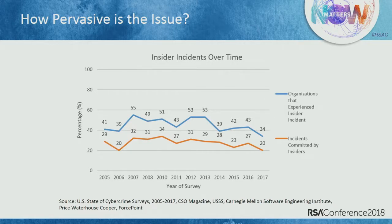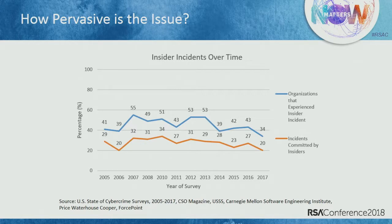Looking at the pervasiveness of insider incidents — we've been doing surveys going back to about 2004. On average, about 50 percent of organizations experience at least one malicious insider incident in the previous year. At the keynote on Tuesday, Christopher Young, the CEO of McAfee, stated that 40 percent of cyber events from 2017 were actually attributed to an insider, quoting the Verizon data breach report. The question is: are you able to prevent, detect, and respond to those activities?